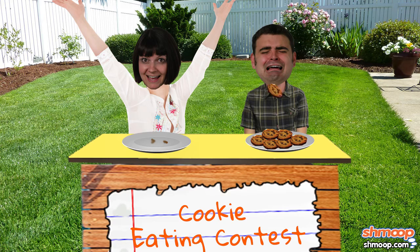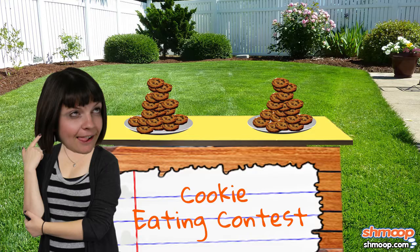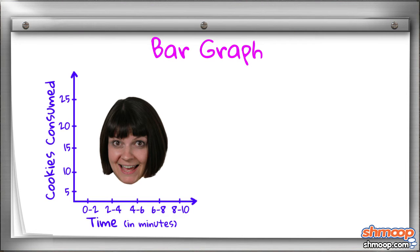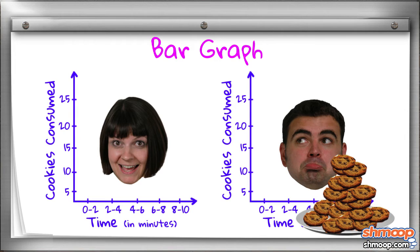Let's revisit the infamous cookie-eating contest of last December and make a bar graph of the results over the course of time. The goal was to eat 25 Chips Ahoy cookies as quickly as possible. So yeah, you won. But let's interpret this data with a bar graph for you and one for your friend, to see how we might be able to give your friend some cookie-eating cred.